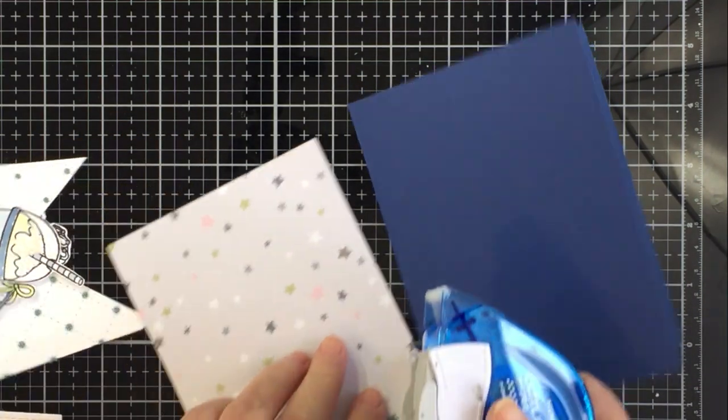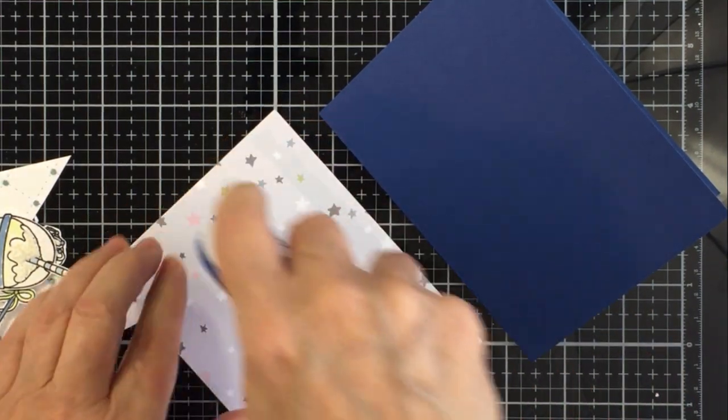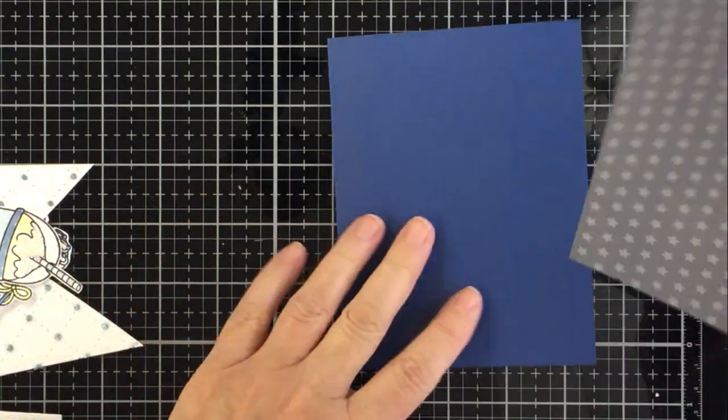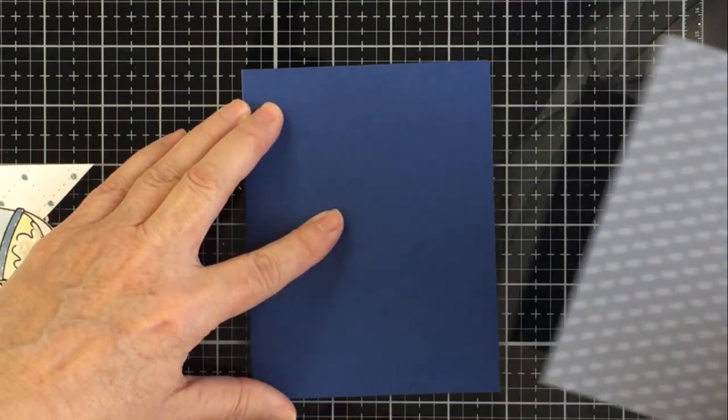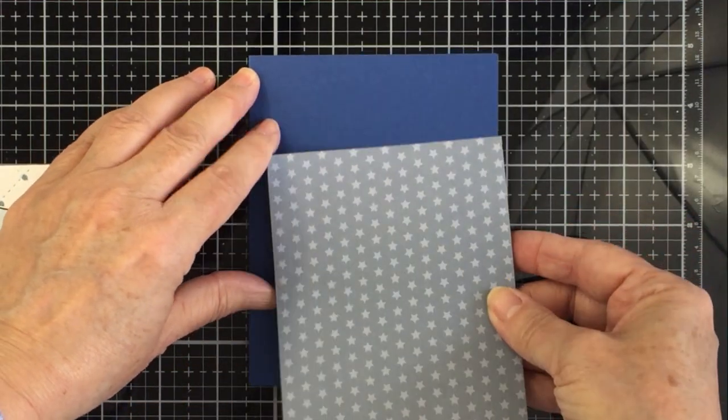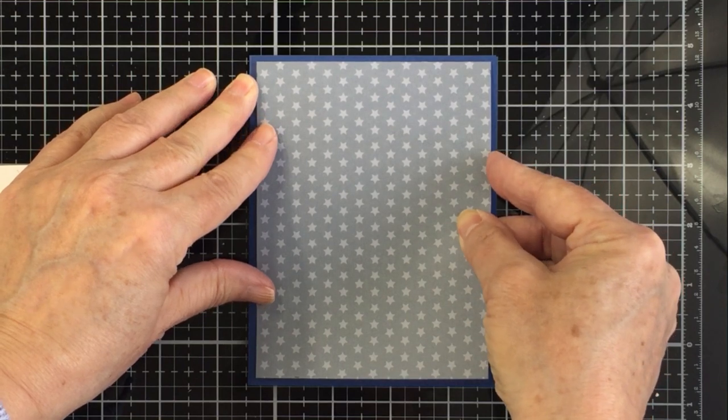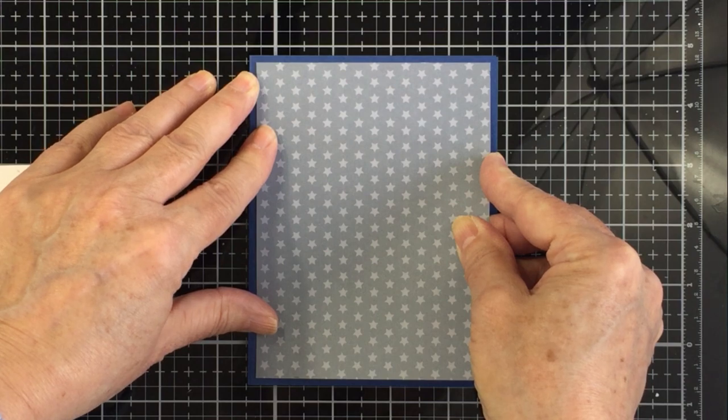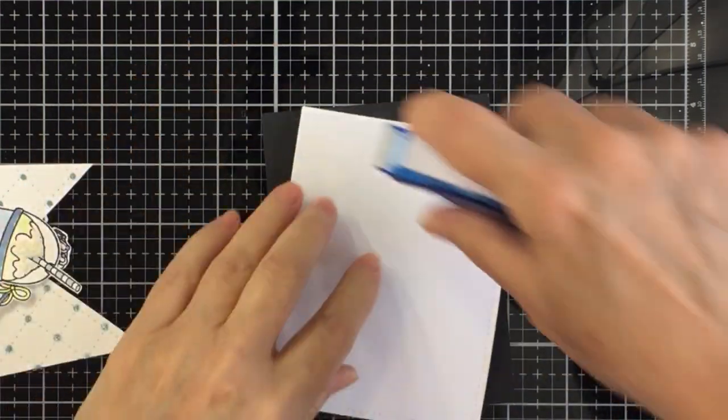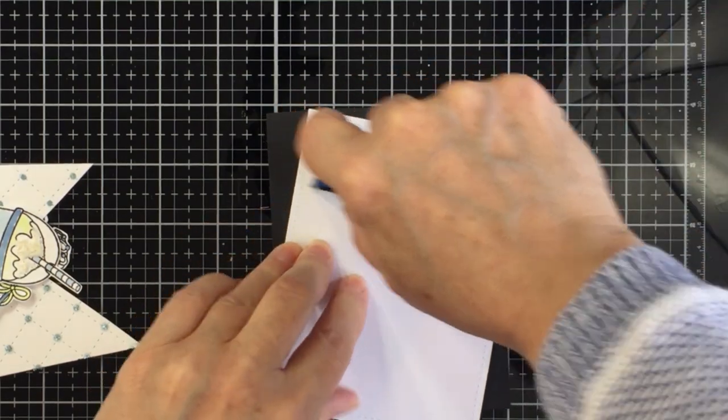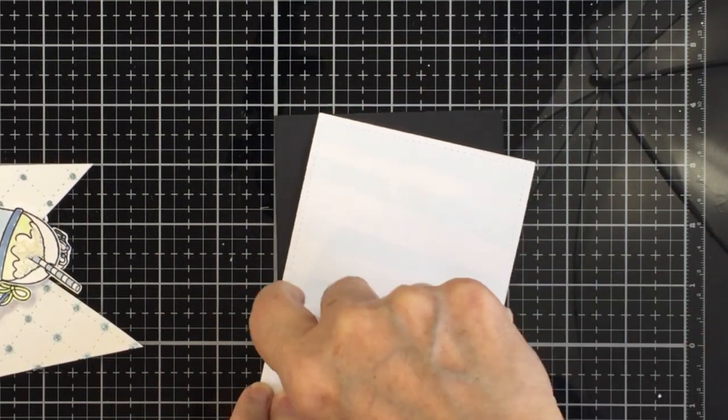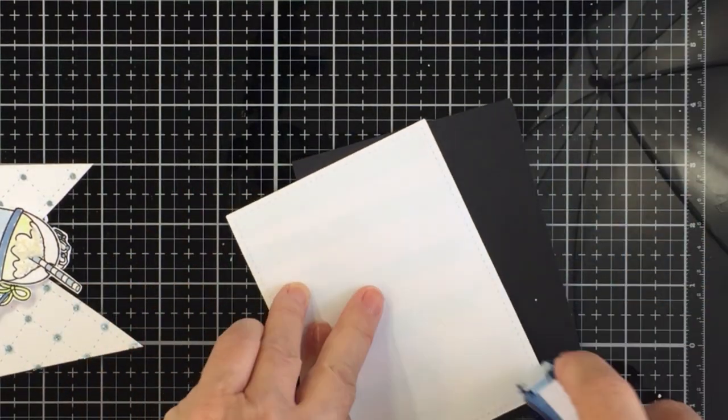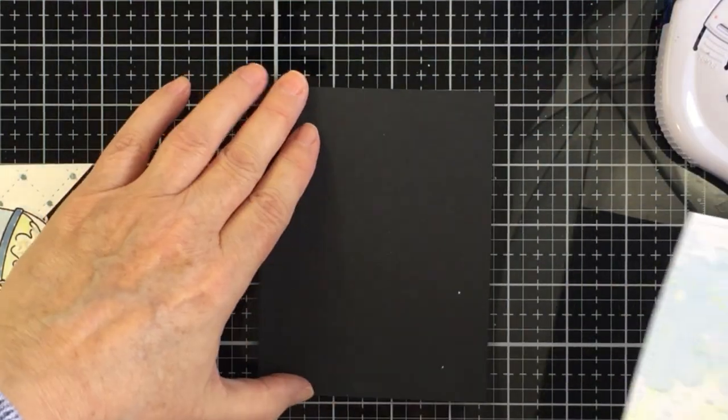I wanted to use a dark blue card base. This is an A2 card base using some Gina K denim cardstock. And I've also cut out a little mat for my card base using the spring lullaby pattern paper pad from Honey Bee. So I just cut it a little bit smaller than A2 sized. And I just really love this kind of a gray, soft gray blue for my card base. And I'm going to adhere my watercolor piece onto a piece of black cardstock that's just slightly larger than the A2 double stitched frame watercolor piece that I have die cut out here.